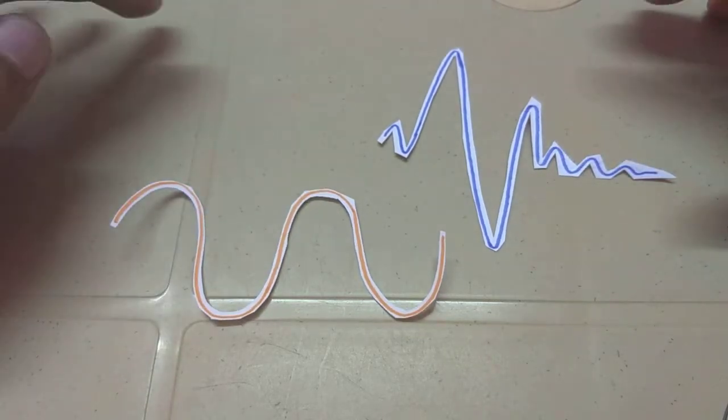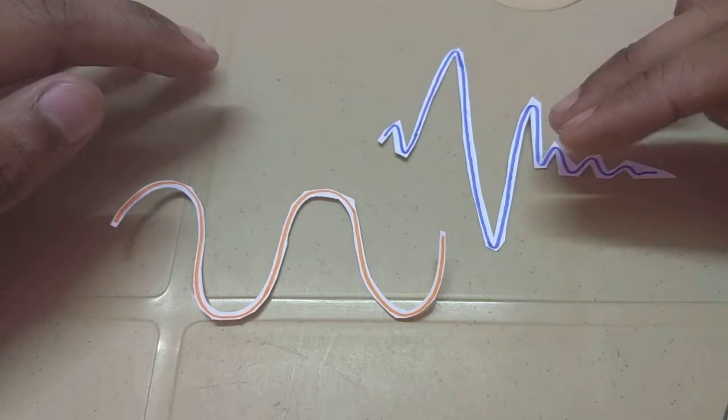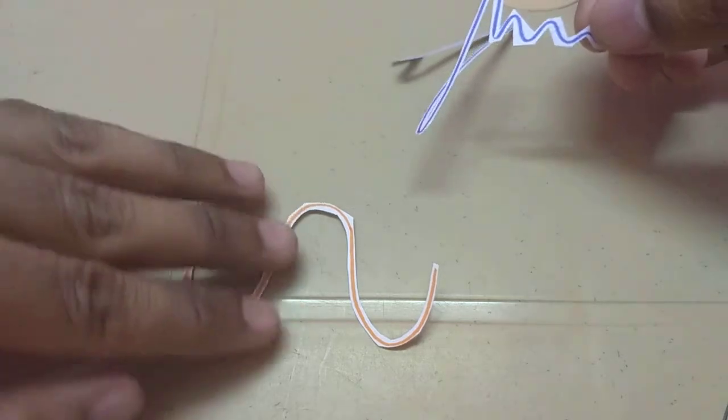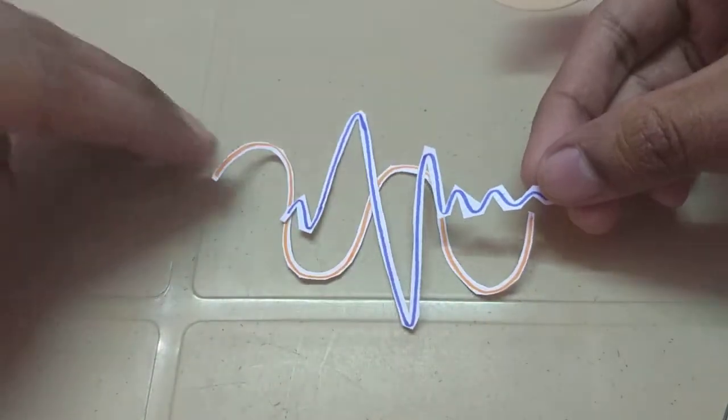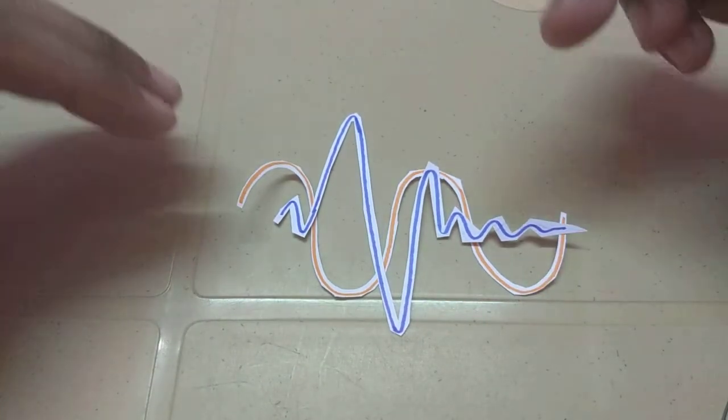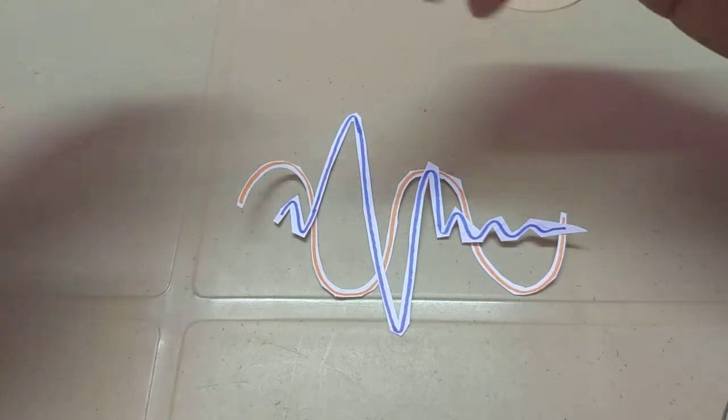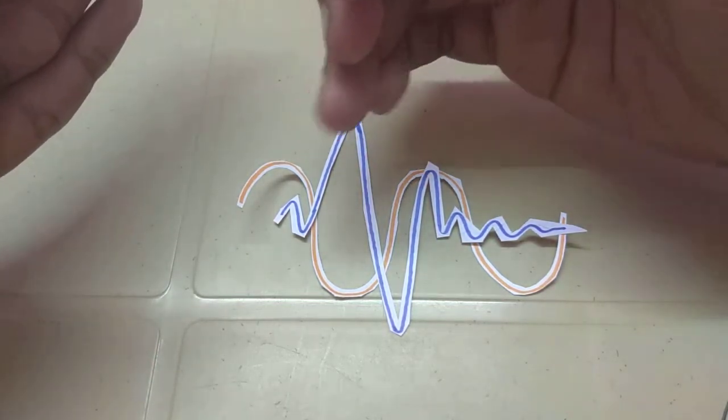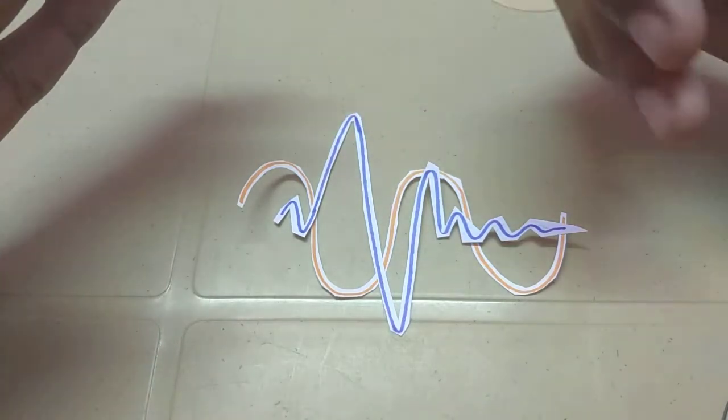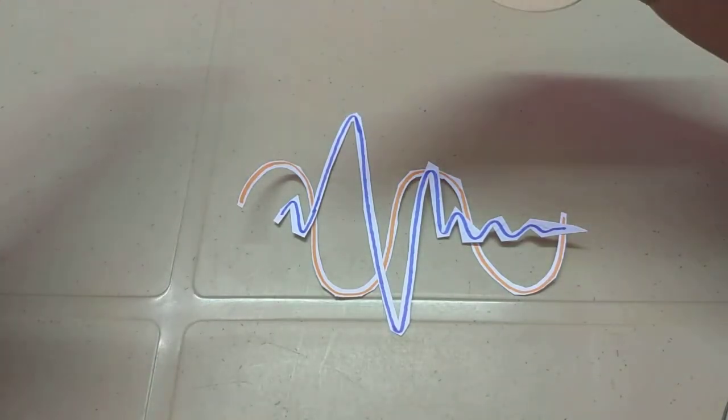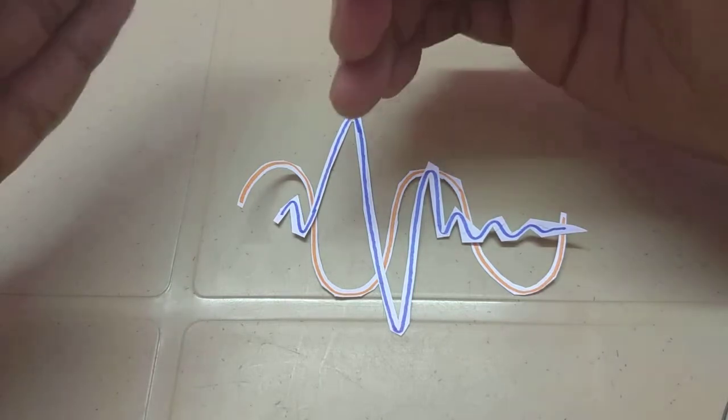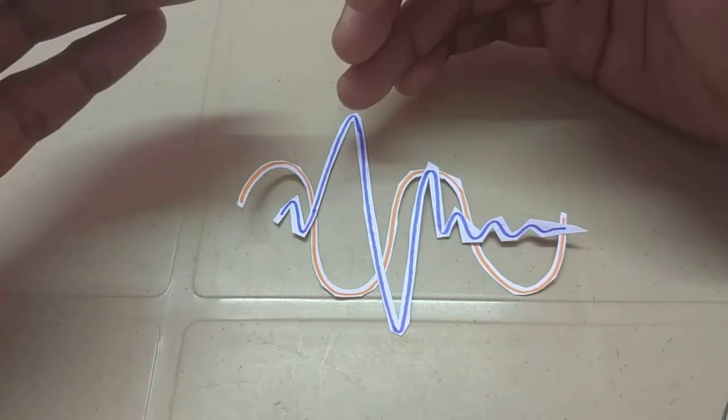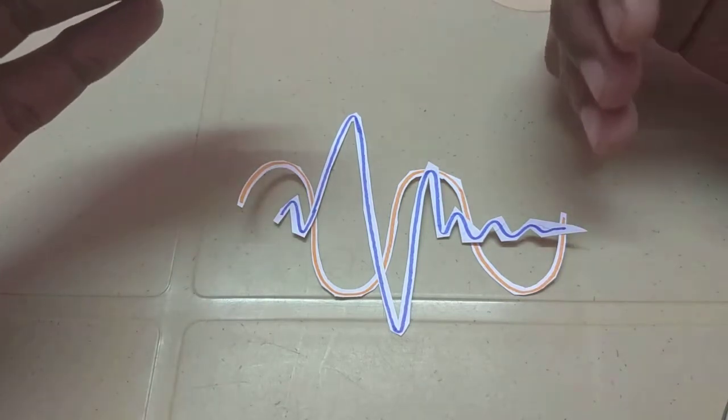In temporal sound masking, a transient signal will mask a stationary signal. It masks some period of time before the onset of the transient and a certain period after the onset. The masking that takes place before the transient is called backward masking, and the masking that takes place after is called forward masking.